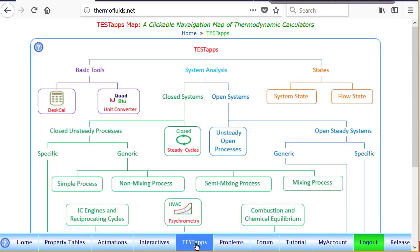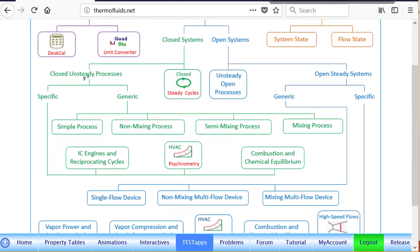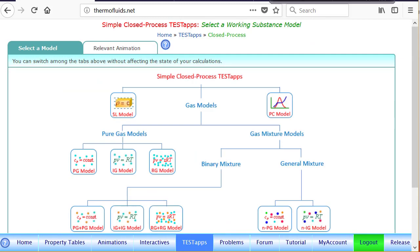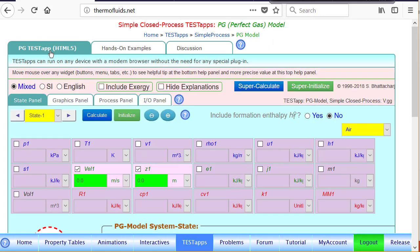In this case, we follow the closed system, unsteady process, generic simple process, and then the perfect gas model to launch the app. Here is already the default fluid.